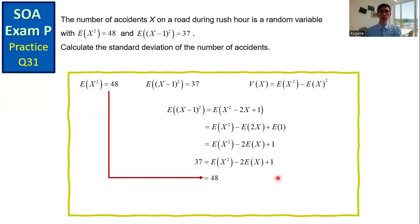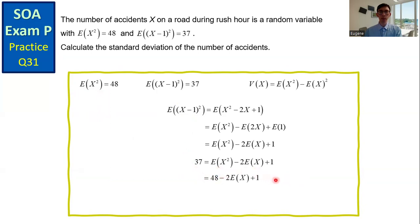Then we get 37 equals 48 minus 2 times the expected value of X plus 1. Here we can solve for the value of the expected value of X, which is 6.